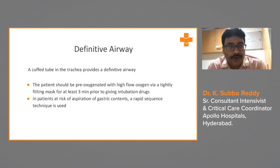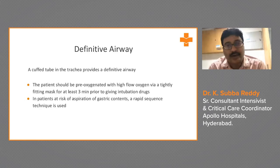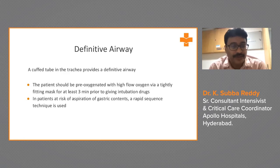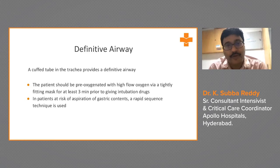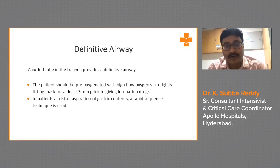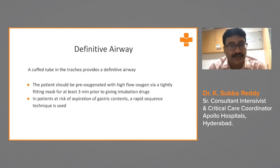A cuffed tube in the trachea provides a definitive airway. You cannot keep a temporary airway for a long time; you have to go for a definitive airway. The patient should be pre-oxygenated with high-flow oxygen via a tightly fitting mask for at least three minutes prior to giving the intubation drugs. If you don't do this, the moment you give sedation, saturations will start falling — especially in ARDS and COVID patients, who can desaturate very rapidly and have a cardiac arrest.